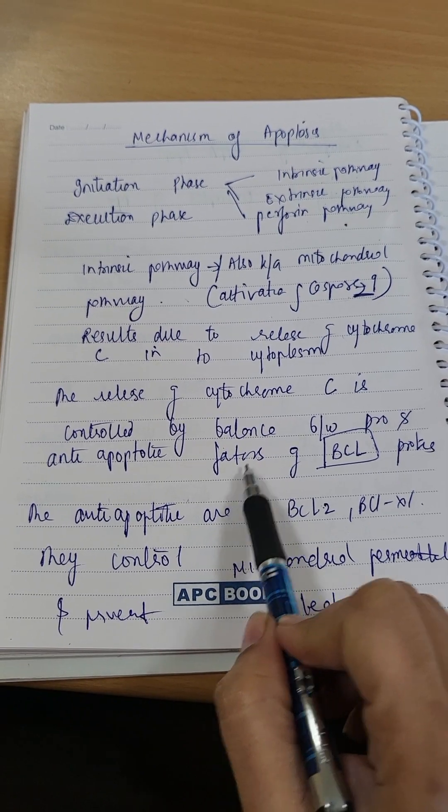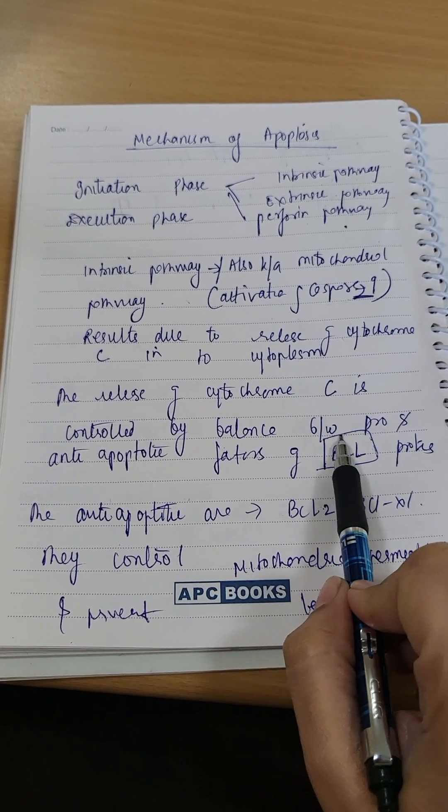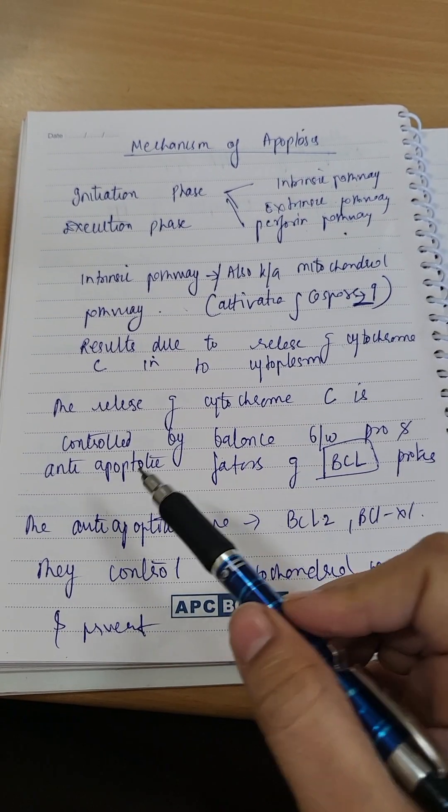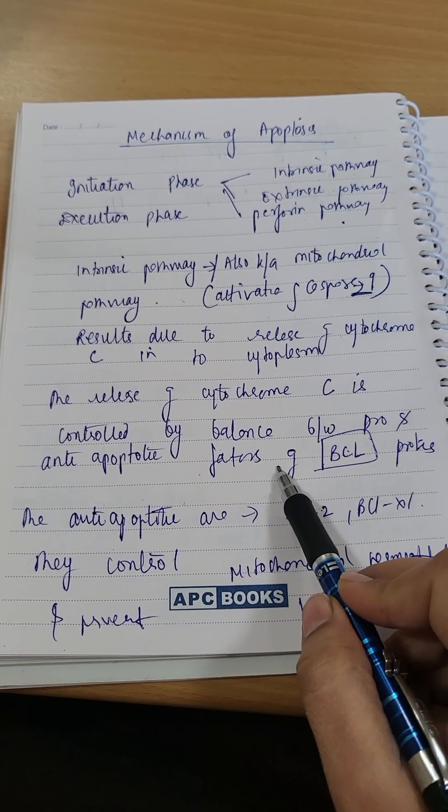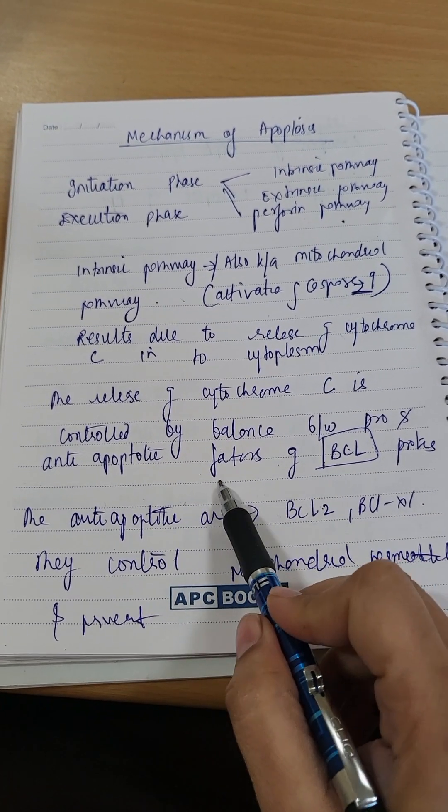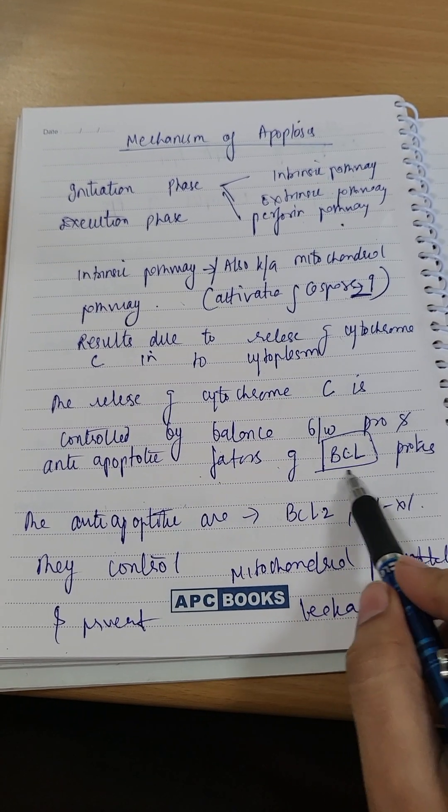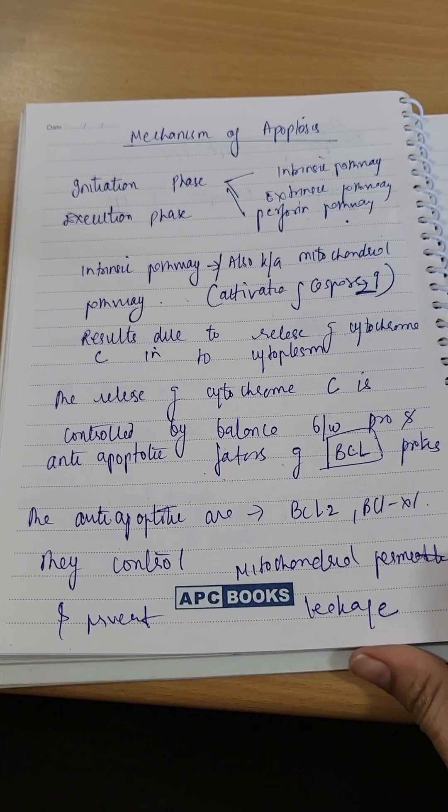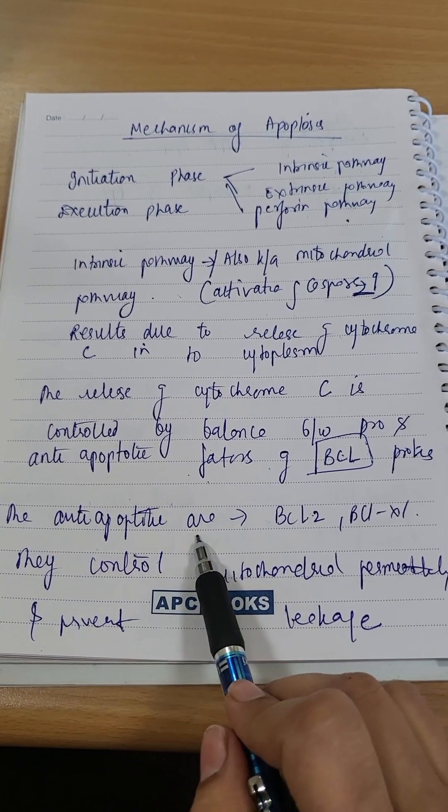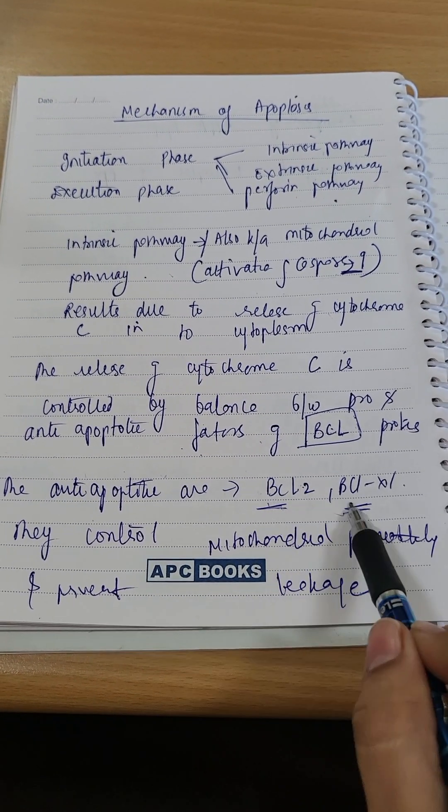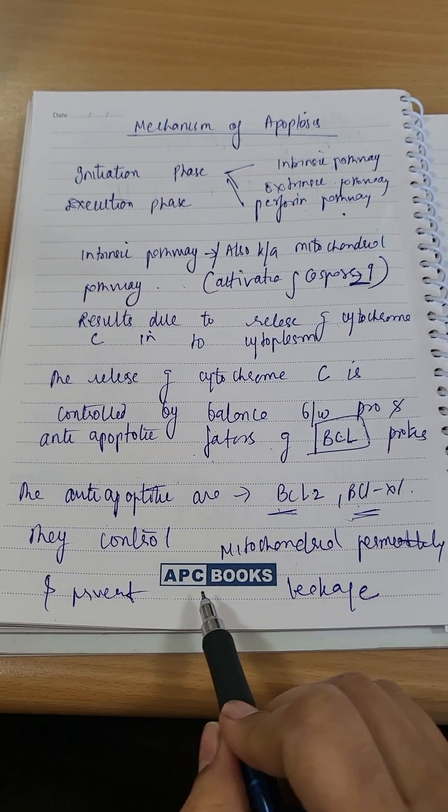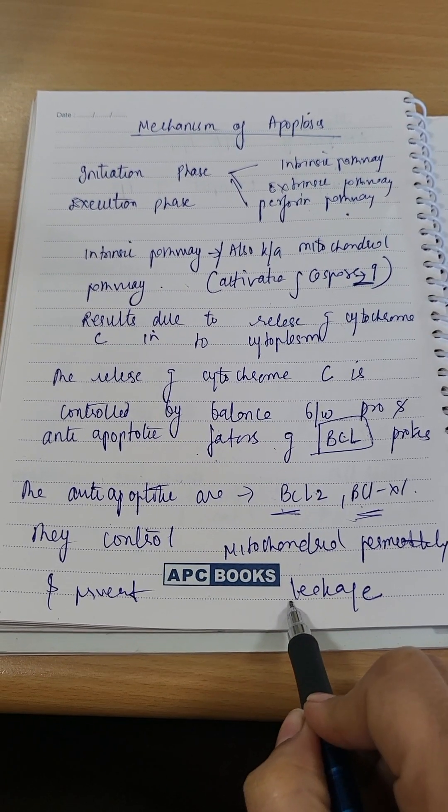Pro means favor and anti is to inhibit. So pro-apoptotic factors will favor apoptosis, whereas anti-apoptotic will inhibit. Which family? BCL family of proteins. The anti-apoptotic are BCL2 and BCLXL. They control the mitochondrial permeability and prevent leakage.